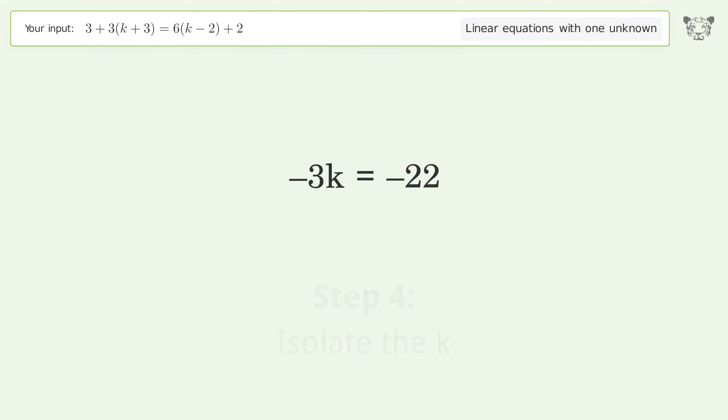Isolate k by dividing both sides by negative 3. Cancel out the negatives and simplify the fraction.